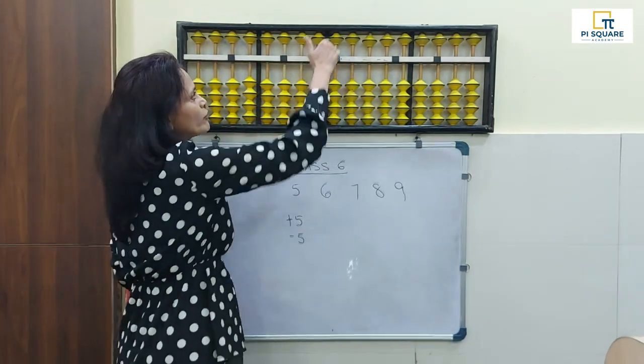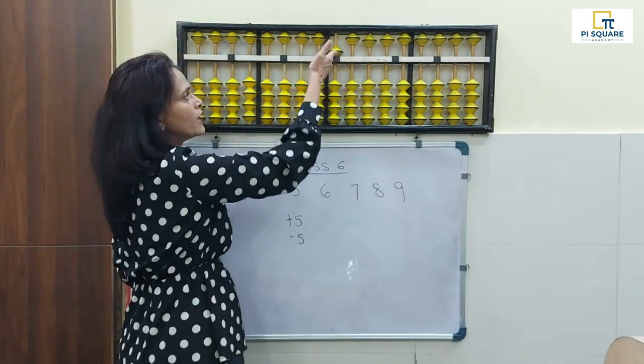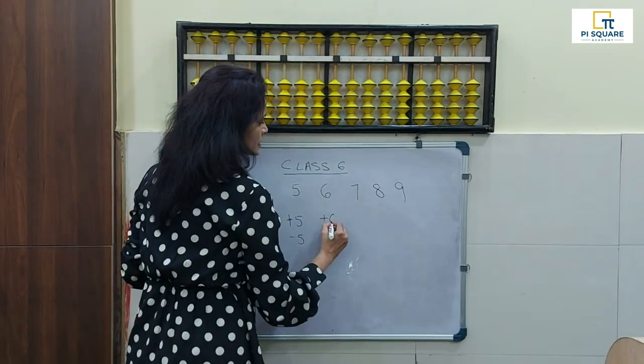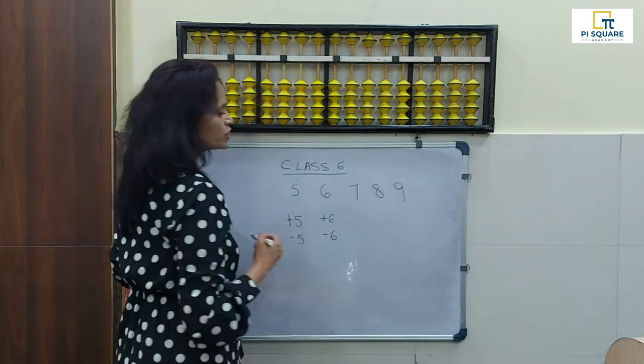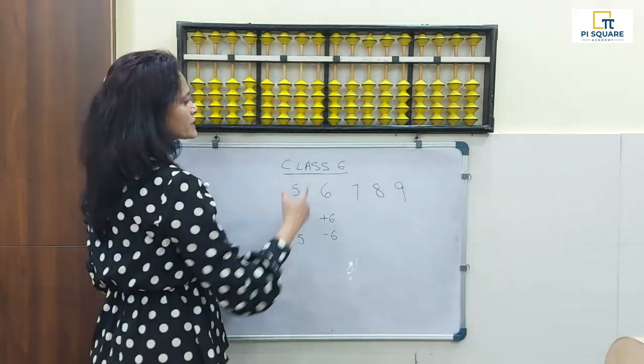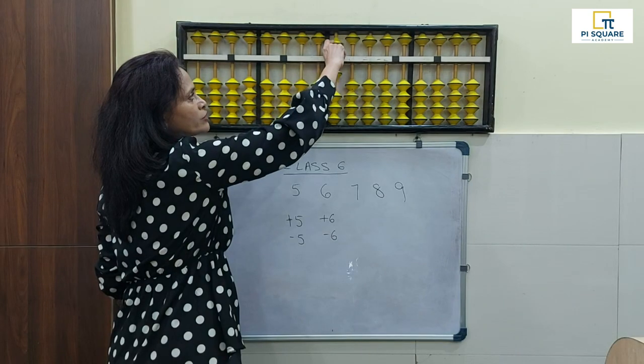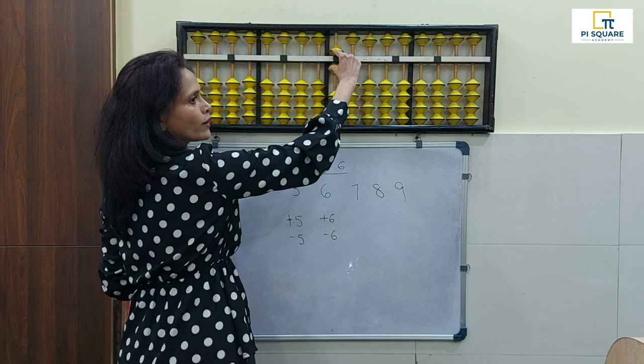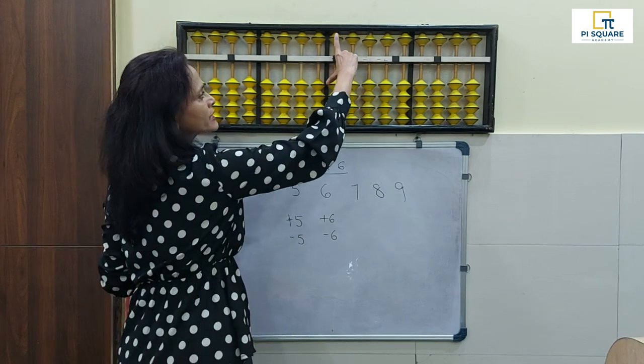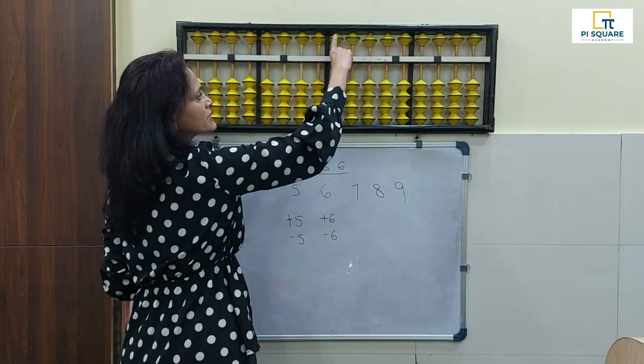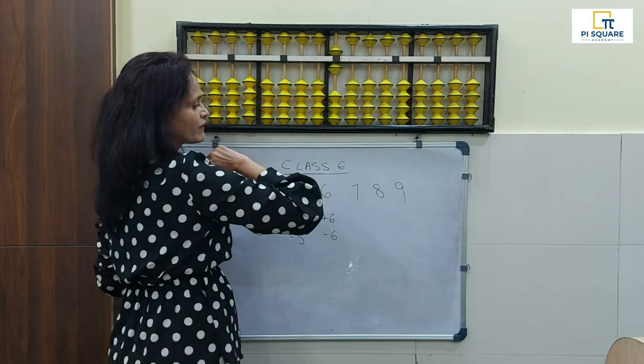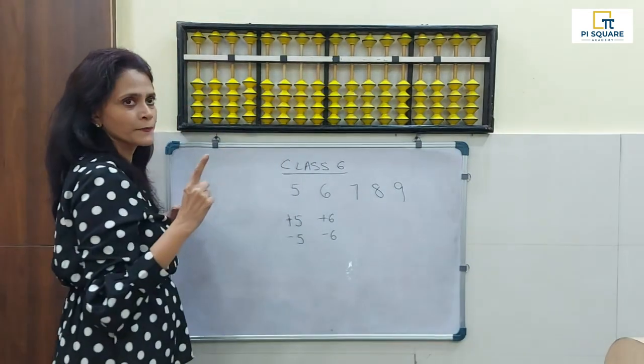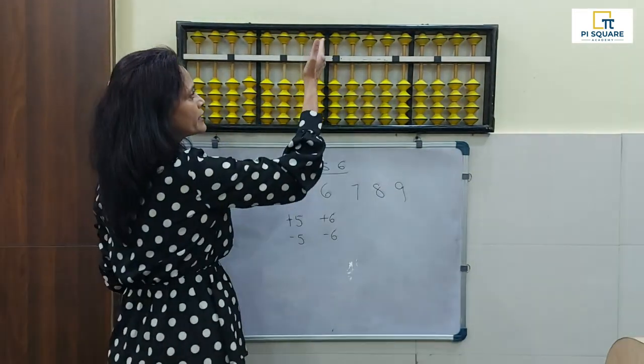Now for number 6. Plus 6 and minus 6. First of all, you need to know how to get the value 6. So for 6, 5 and 1 join together. See how I'm using my index finger on 5, my thumb is on this lower bead. So minus 6 is split together. Plus 6 is they both join together—5 and 1 join together. Minus 6, 5 and 1 split together. So the top bead is like a 5 rupee coin, and the lower beads are like 1 rupee coins.